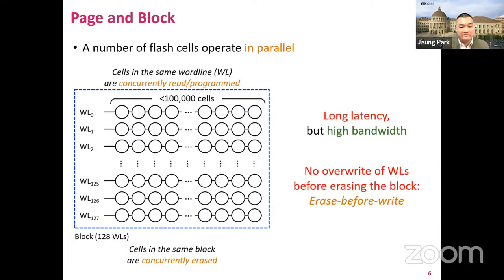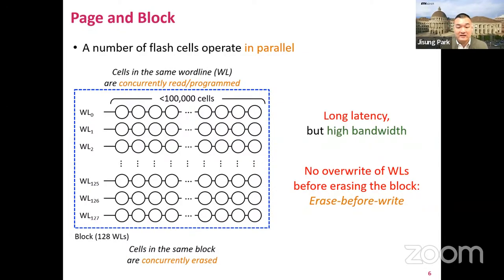Another problem is that NAND flash memory cannot efficiently support overwrites to a programmed word line, meaning we need to first erase the entire block before writing any new data — the erase-before-write property. We can issue a program command, but in most cases doing so cannot store the correct data. It is impossible to override a zero cell to be a one cell, because making that cell a one requires decreasing the cell's threshold voltage level, but the program operation can only increase the target cell's threshold voltage level.